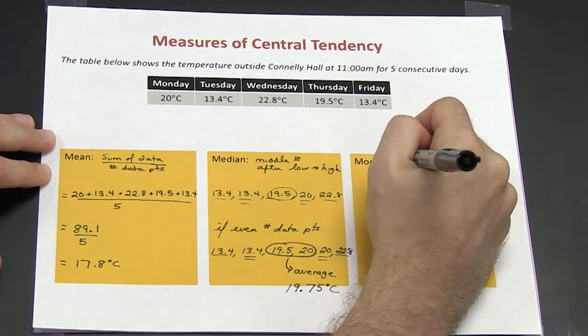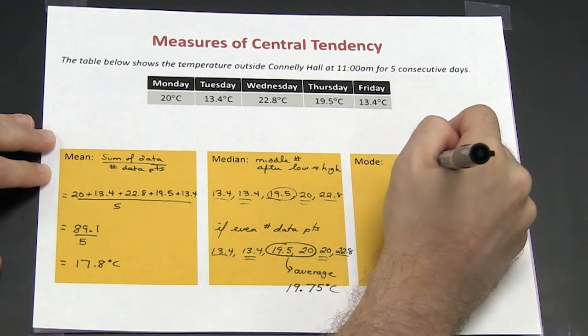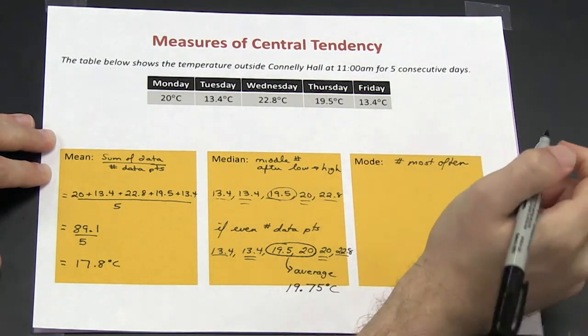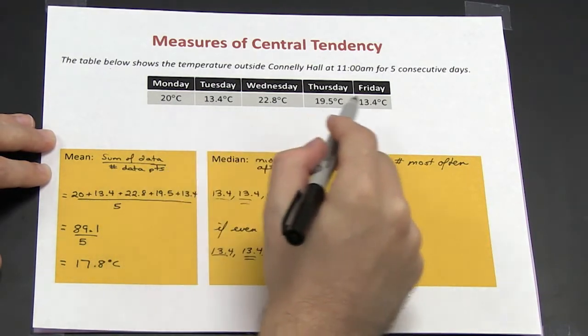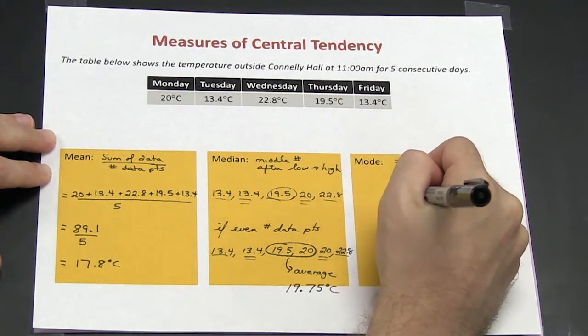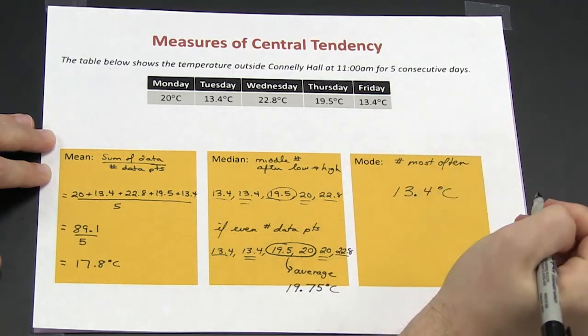Last, mode. Mode is the number that occurs most often, and as you can see here, if we look at my data set, the number that occurs the most number of times is 13.4 degrees Celsius.